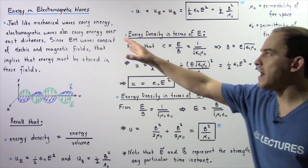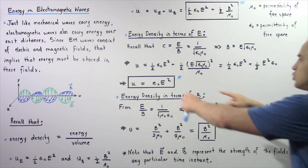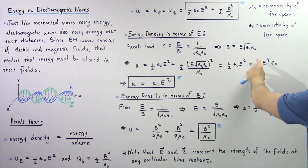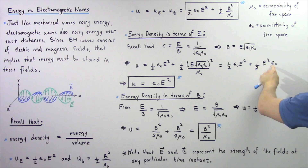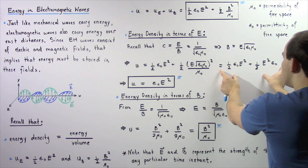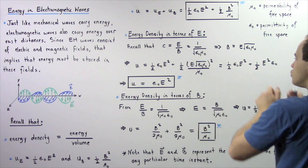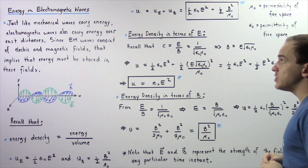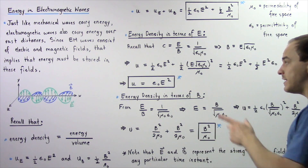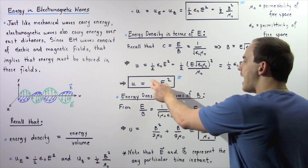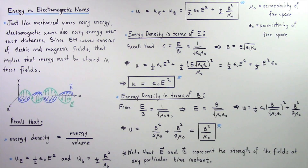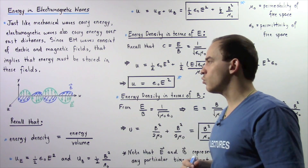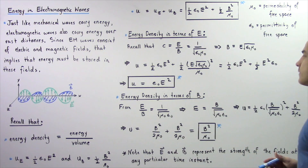The energy density u of our electromagnetic wave equals one half epsilon naught times E squared plus one half epsilon naught times E squared. Combining these two terms, the factor of two cancels, and we are left with u equals epsilon naught times E squared. This equation gives us the total energy density of the electromagnetic wave expressed only in terms of the electric field.